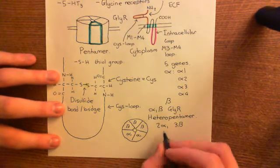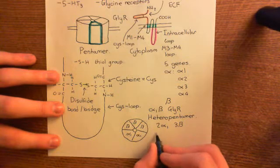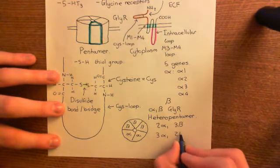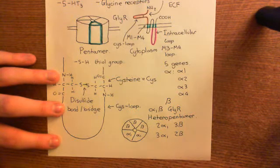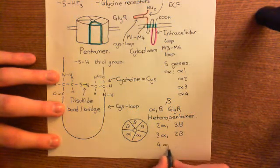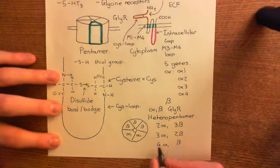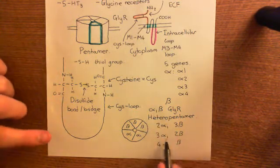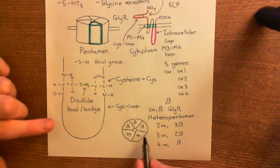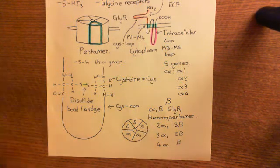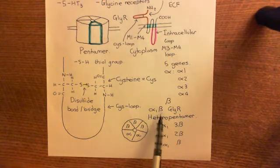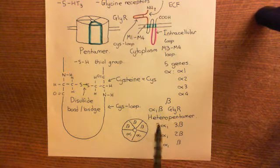In addition, this stoichiometry isn't even set. So, for instance, we also think three alpha-1s, two betas may well be expressed. In addition, there may even be four alpha-1s and a beta. So, basically, it's not understood the stoichiometry of the subunits and it's certainly not understood how they're arranged. What we do know for sure is that the main form of glycine receptors has both alpha-1 subunits and beta subunits in.